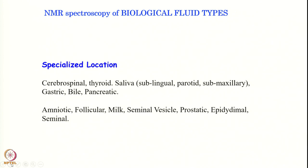Other than these body fluids, if you want to understand how a drug is reaching specialized locations — such as cerebrospinal fluid, thyroid, sublingual or parotid saliva, submaxillary or gastric location, bile juices, pancreatic juices — lots of these can be done with localized NMR spectroscopy. Even amniotic fluid, follicular fluid, or milk can be studied. How a drug goes into milk is a major concern, since mother's milk is very important for babies. One may also want to know the effect of a drug on seminal vesicles, or the prostate. Many such things can be understood by NMR spectroscopy.